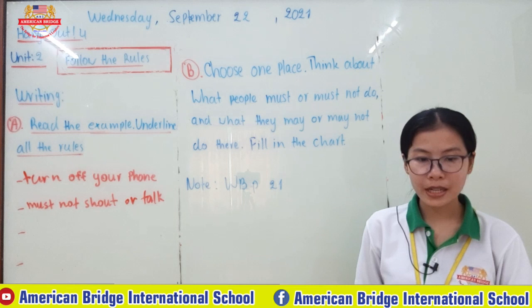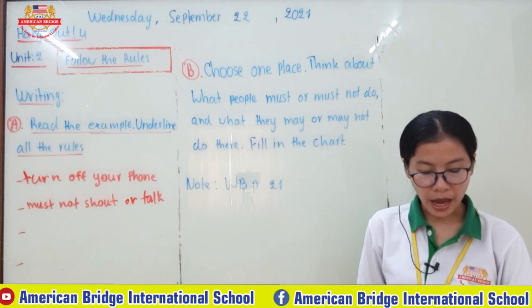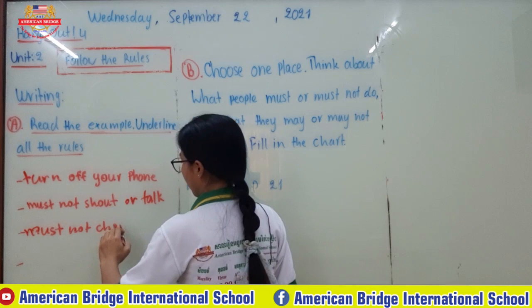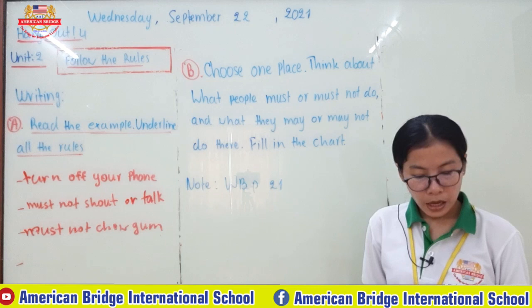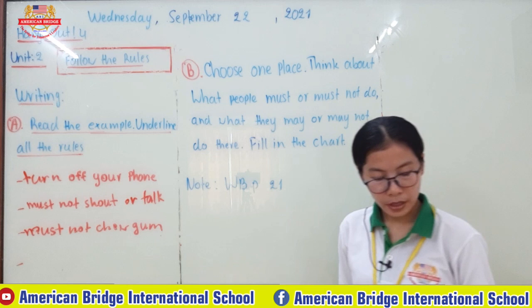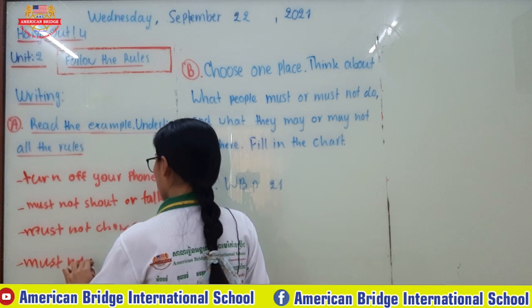But you must not chew gum. So the third rule is: must not chew gum. Gum is sticky and some people put it on the chairs. Also, you must not use a video camera inside the cinema. So the fourth rule is: must not use a video camera.